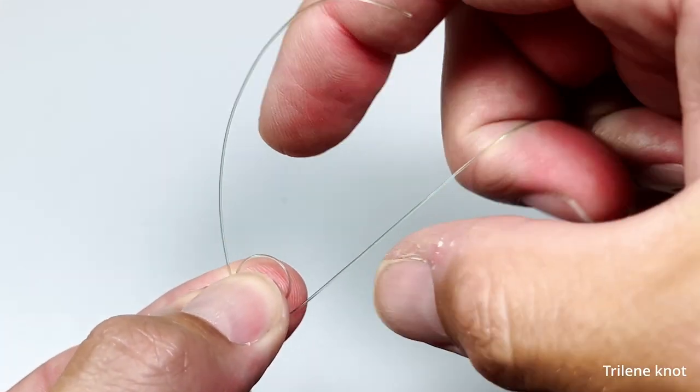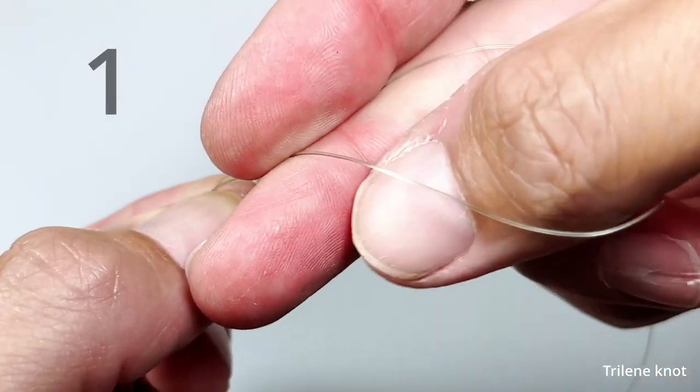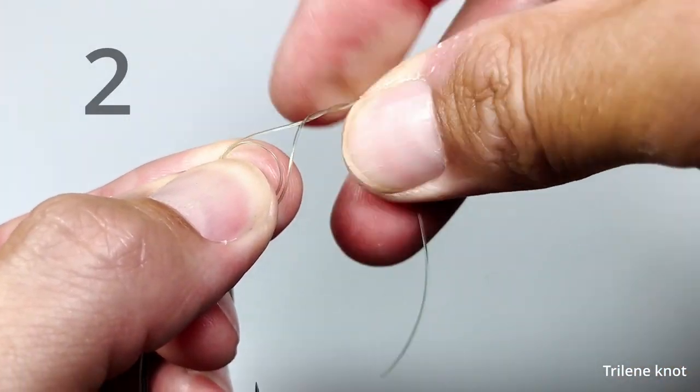You cinch the loop down, then begin twisting the tag line around the main line. You twist four or five times.